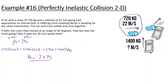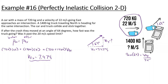After they hit, they're moving at an angle of 64 degrees. We know the velocity in the X direction is 7.47 meters per second. We can use tangent to find the final velocity in the Y direction: tan(64) equals V final Y divided by 7.47. So tan(64) times 7.47 gives us 15.32 meters per second in the Y direction.